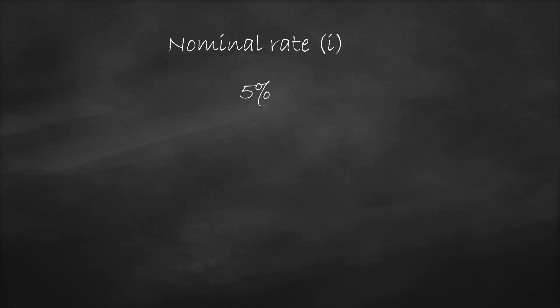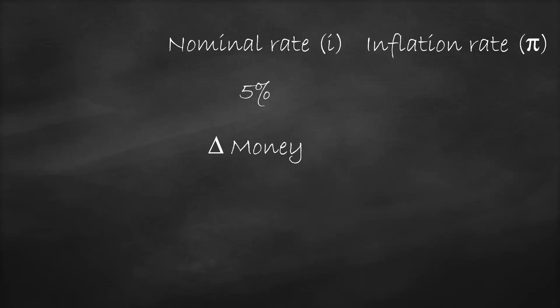Let's assume that you're going to put a deposit in a bank, and you will get a nominal rate equal to five percent. This means your money will increase by five percent after one year — but does that mean you can buy more goods and services by five percent? Of course not, because we have inflation. Let's assume that the inflation rate is two percent, meaning prices will increase by two percent after a year.